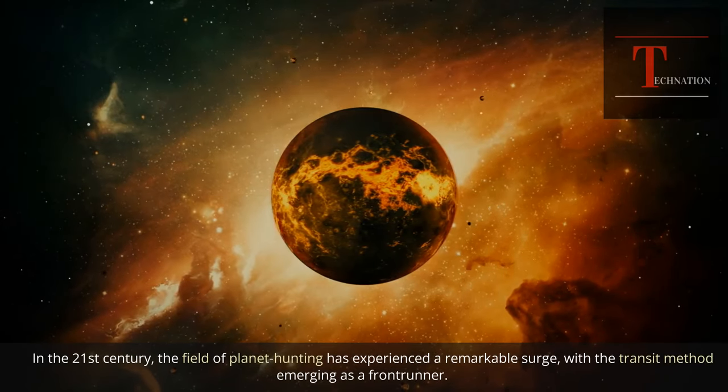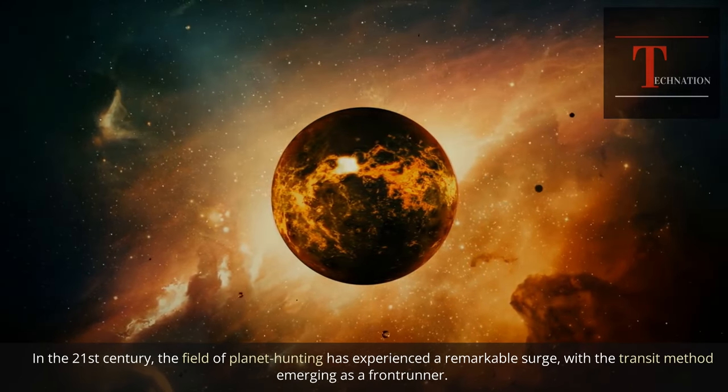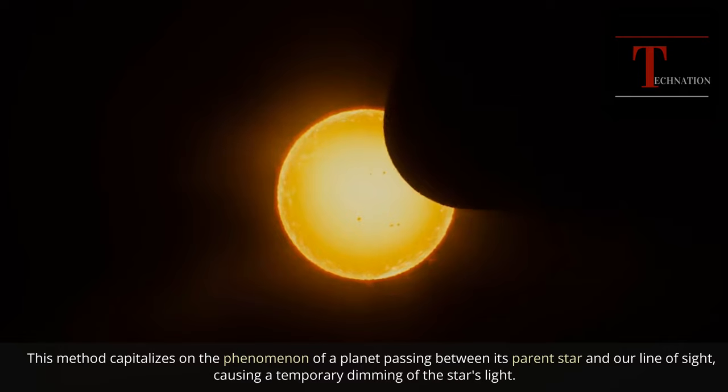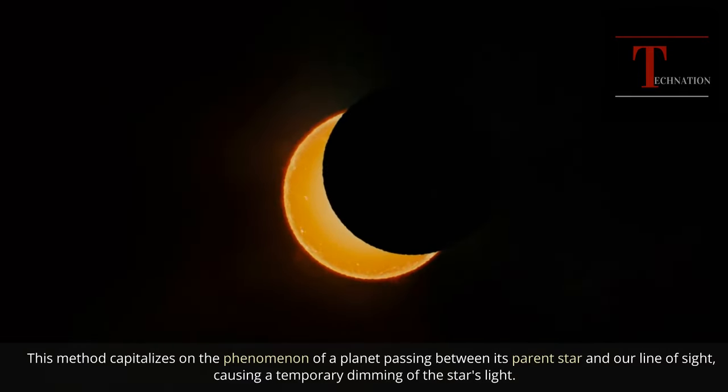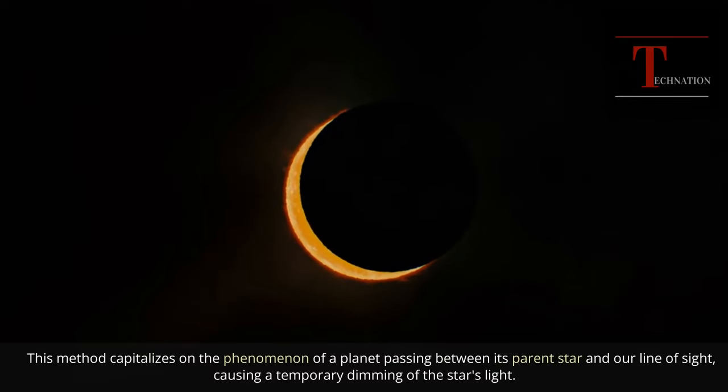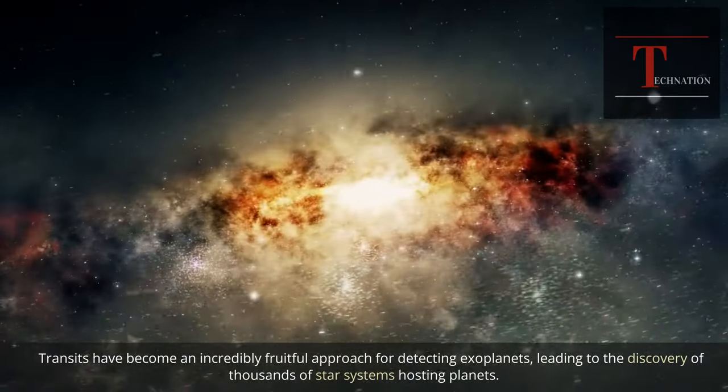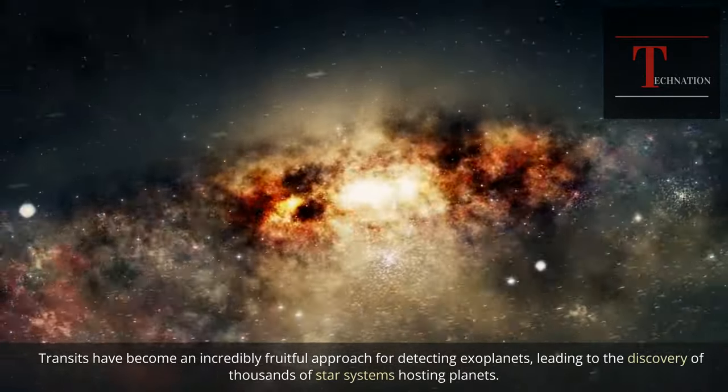In the 21st century, the field of planet hunting has experienced a remarkable surge, with the transit method emerging as a frontrunner. This method capitalizes on the phenomenon of a planet passing between its parent star and our line of sight, causing a temporary dimming of the star's light. Transits have become an incredibly fruitful approach for detecting exoplanets, leading to the discovery of thousands of star systems hosting planets.